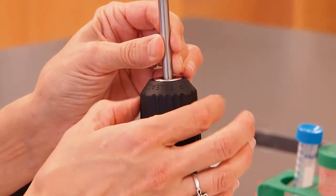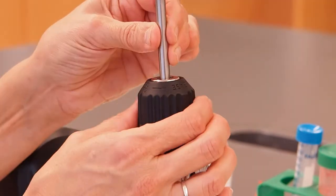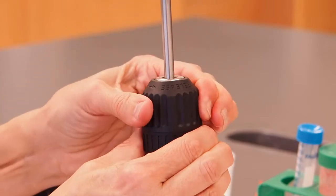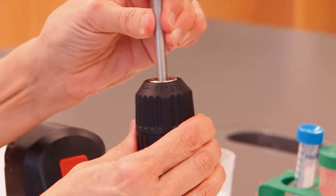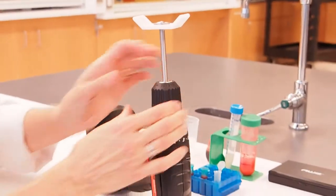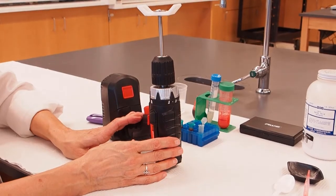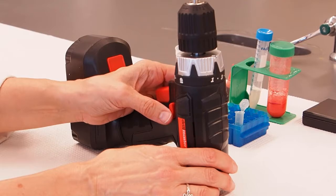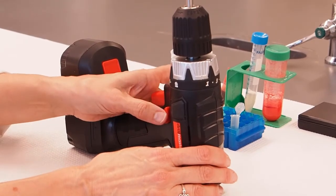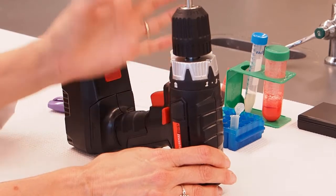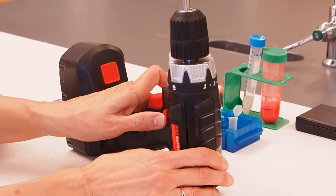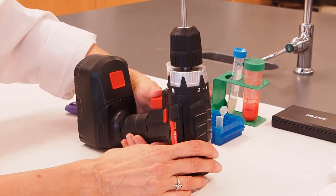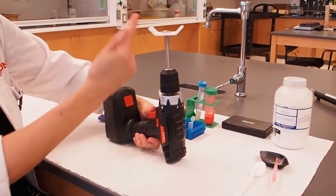You want to tighten this thing that's called the chuck until your sample holder is in there good and tight. So here I can't really move it around. Now we're going to test our centrifuge by turning on the drill. If you have this kind of drill, it has a safety button right here that when it's in the middle is off and when it's pushed to one side or another, it's on. So to turn this on, we're going to push it all the way. Then you can push the button on the drill and the drill will spin your sample holder.